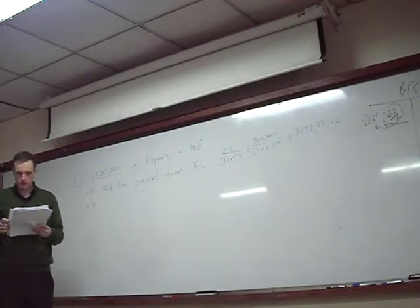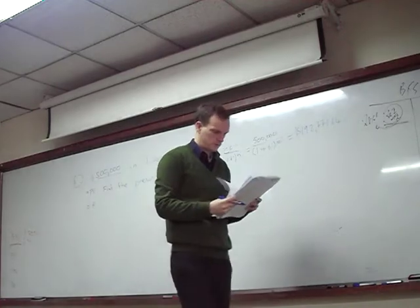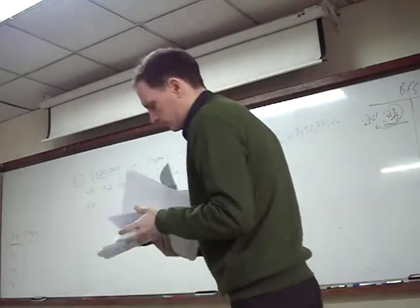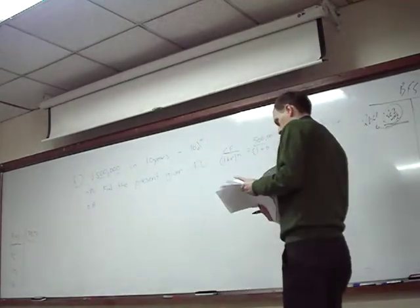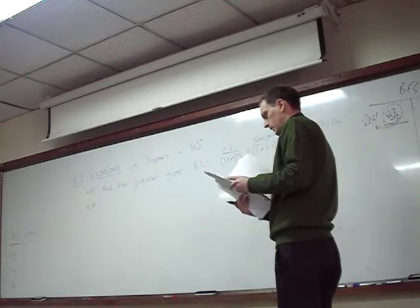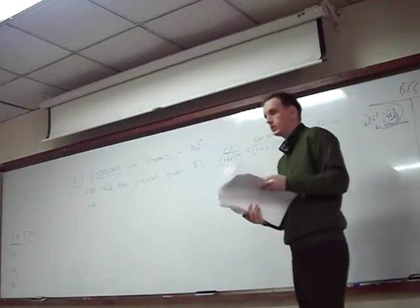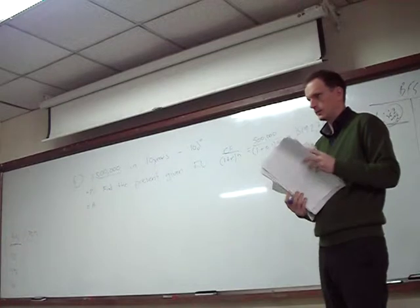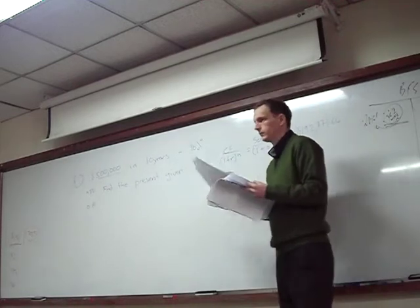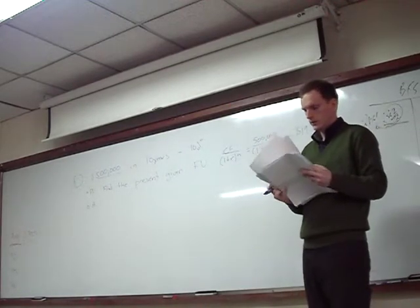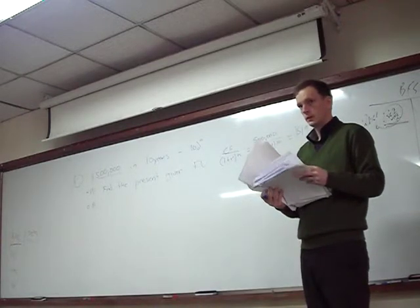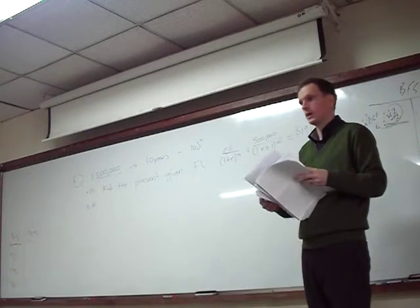Is that calculation right — is it 192? So does that number look right? If I have 200,000 today and the interest rate is 10%, is that 500,000 in 10 years? Should this number be lower or higher? It's lower. Should it be much lower? The interest rate is 10% over 10 years — should it be a lot lower or a little lower?